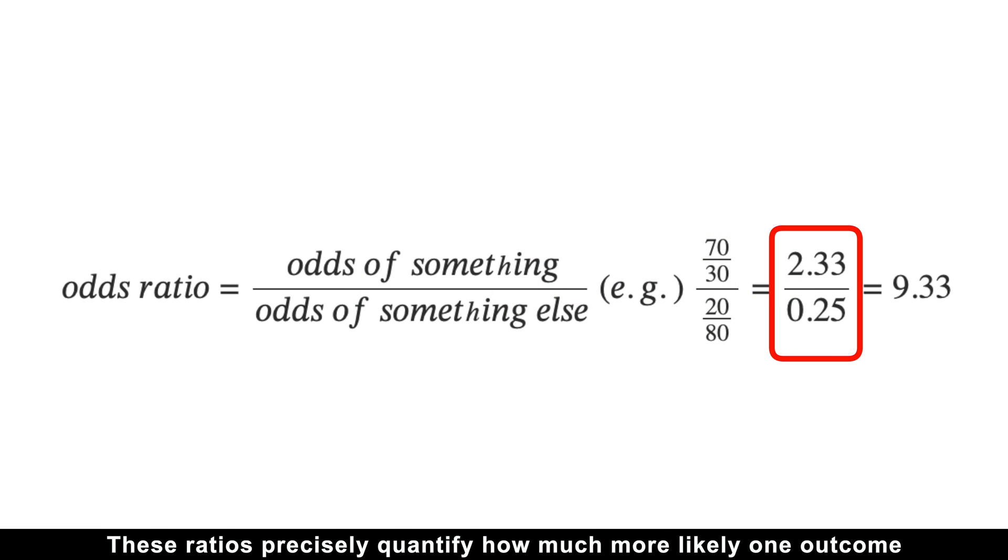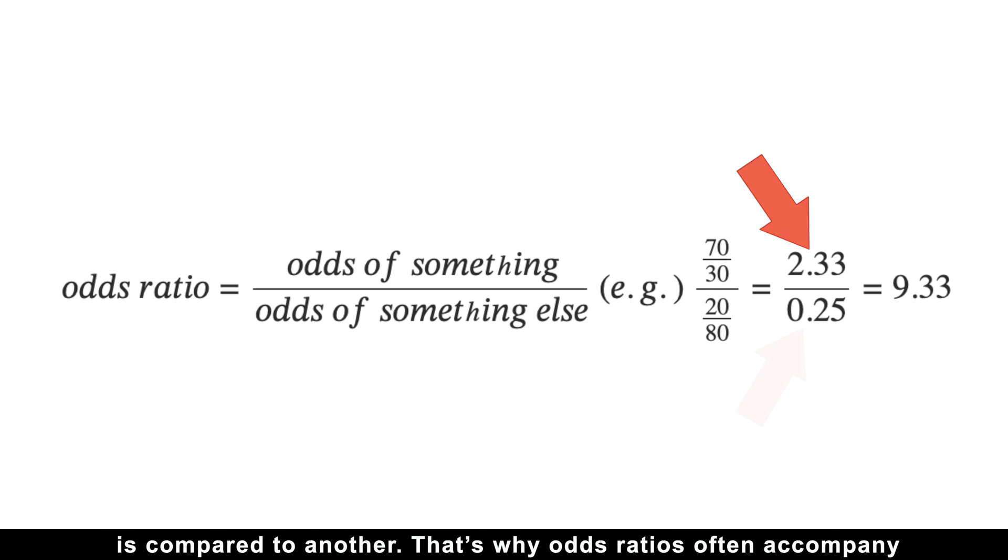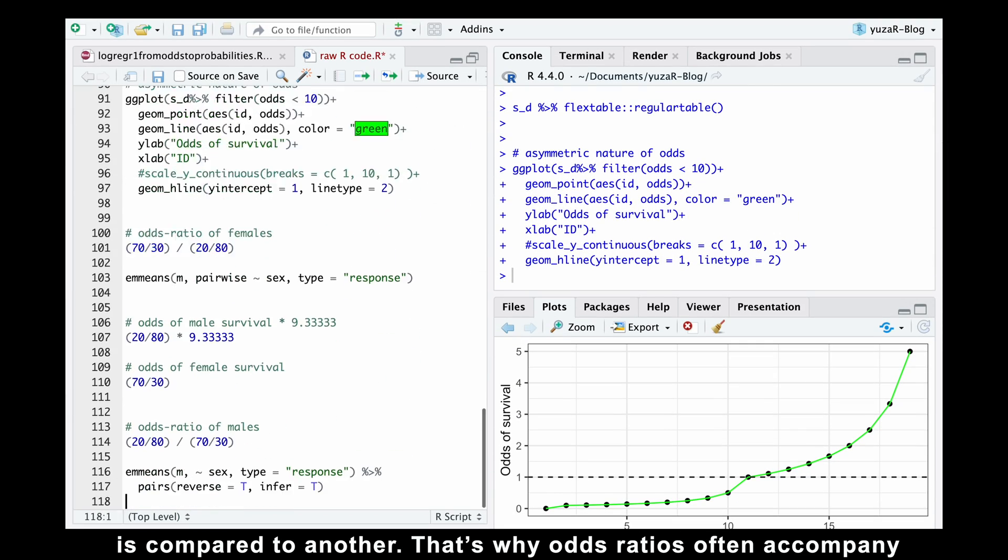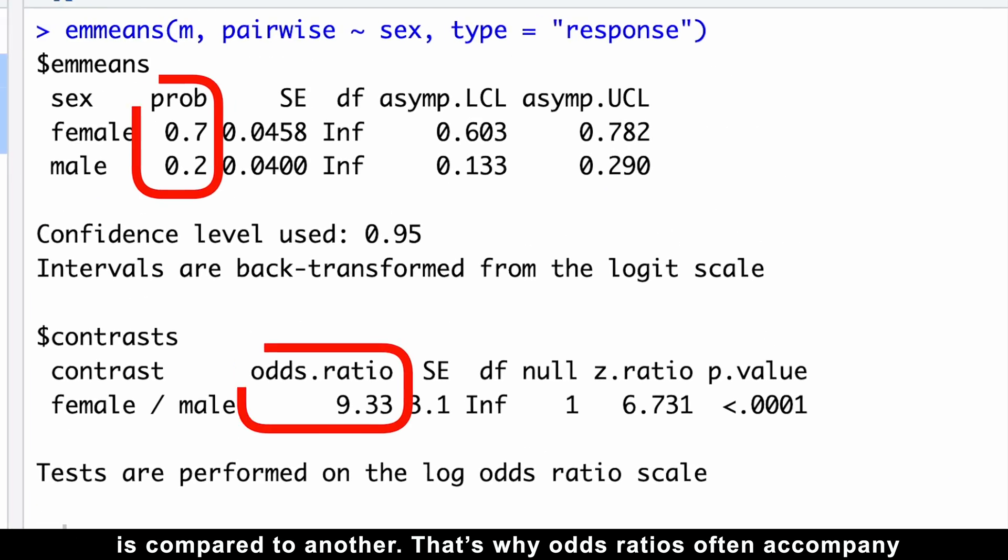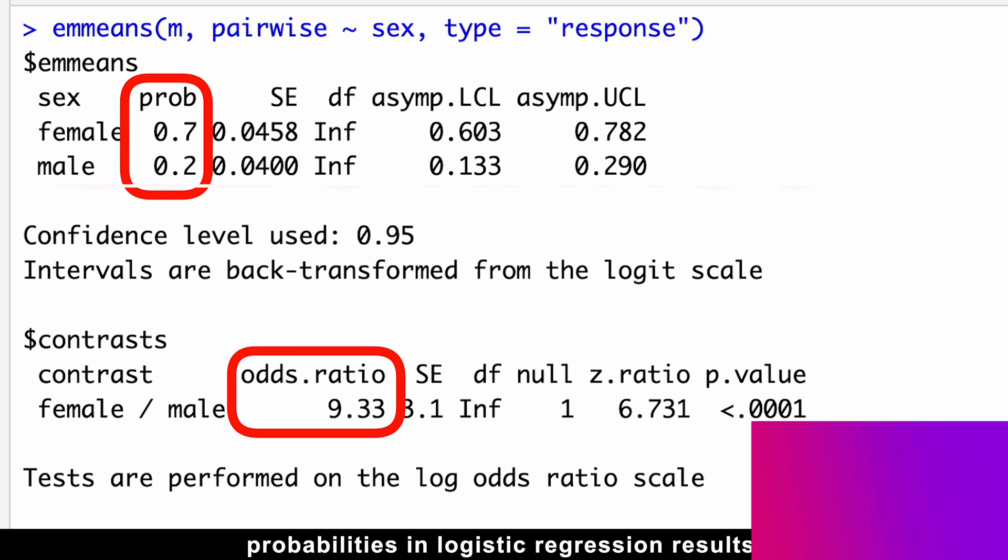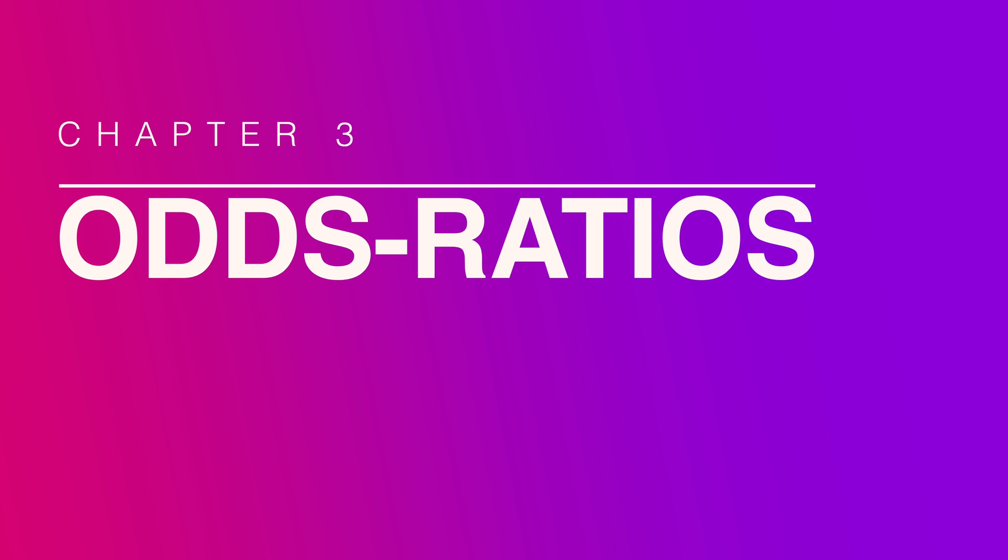But the real power of odds lies in their ability to construct odds ratios. These ratios precisely quantify how much more likely one outcome is compared to another. That's why odds ratios often accompany probabilities and logistic regression results, so we need to talk about odds ratios.